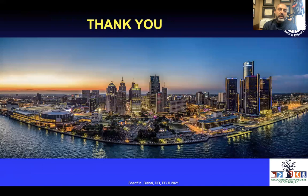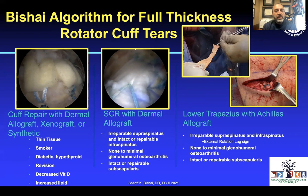My algorithm for these injuries: if I have a tear with thinner tissue, or the patient is a smoker, diabetic, hypothyroid, revision case, has decreased vitamin D, or increased lipids, I may augment with dermal allografts, xenografts, or even a synthetic. If I have an irreparable supraspinatus, I'll go to a superior capsule reconstruction; for a supra-infra irreparable tear with an external rotation lag, I'll go to a lower trapezius transfer. Thank you so much for your time.